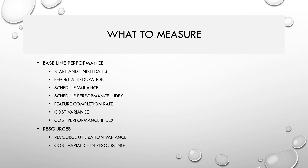Another set of metrics is baseline performance metrics — start and finish dates, schedule, effort, and duration. You can baseline your planned effort and duration for an activity or phase. Schedule variance is plan versus actual; Schedule Performance Index is actual schedule divided by planned schedule — it should always be greater than one, meaning you are ahead of schedule. Cost variance is the difference between budgeted cost and actual cost; Cost Performance Index is the ratio between budgeted cost and actual cost.